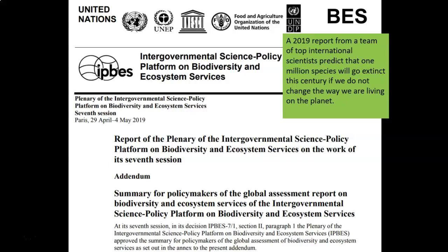The extinction crisis is more than just in Alabama — it's global, across the US, around the world, northern and southern hemisphere, developed and developing world. A report summarizing this came out in 2019 and predicts that by the end of this century, if we don't change the way we're living on the planet, a million species will go extinct. It's estimated there are about 10 million species on the planet, meaning we are looking at losing 10% of species in this coming century, with a lot of those happening in just the next few decades.